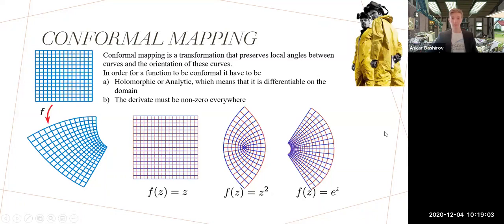Let's move to the main section: conformal mapping. Conformal mapping is a transformation that preserves local angles between curves and the orientation of curves. What is a transformation? It means if we have f(z) on some domain z and transform domain z into range w. For example, this is z and this is w. It looks like a square and now it's something different.